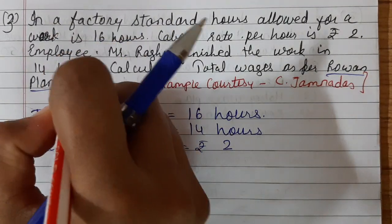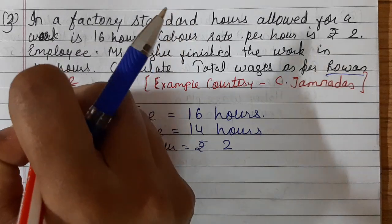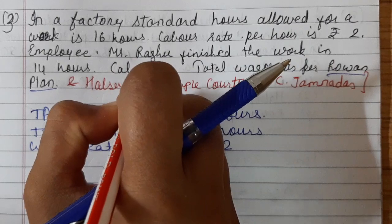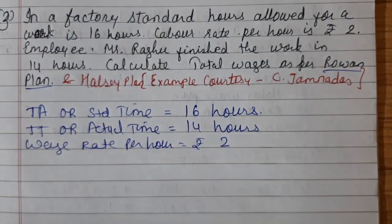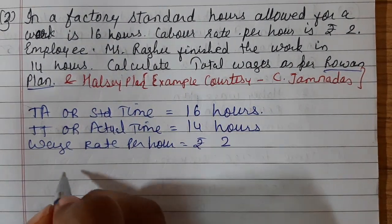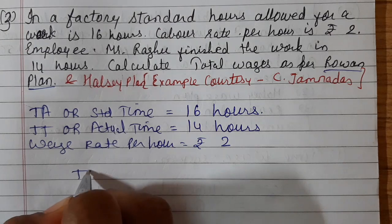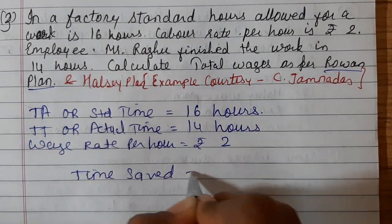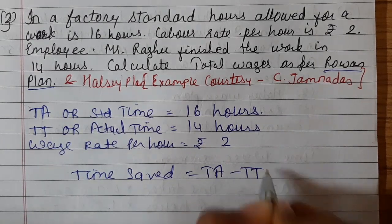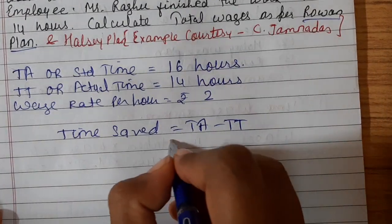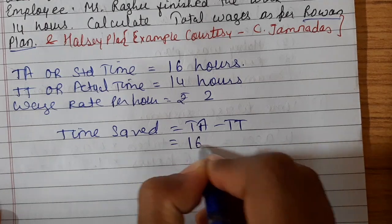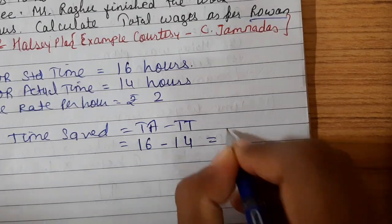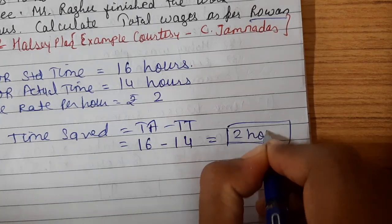We will modify the example and solve both Halsey plan and Rowan plan so that practice can be done for both. For that purpose we require time saved, which is time allowed minus time taken. Time allowed is 16 hours and time taken is 14 hours, so time saved is 2 hours.